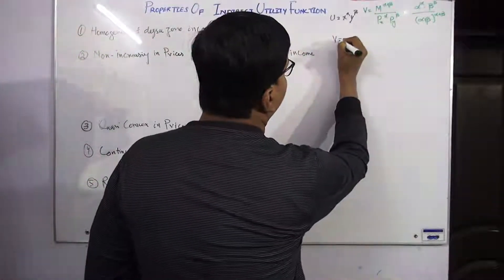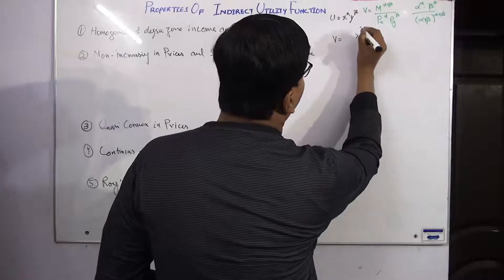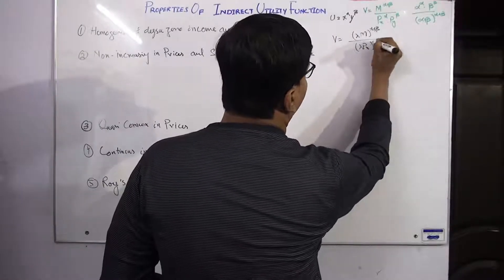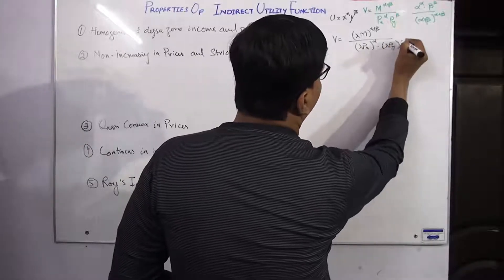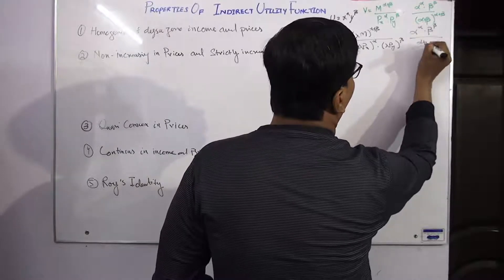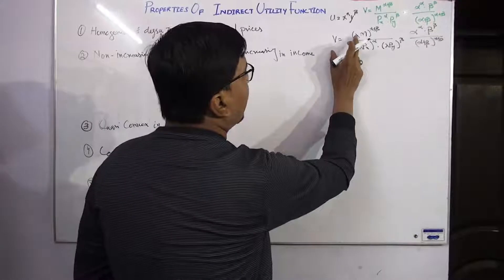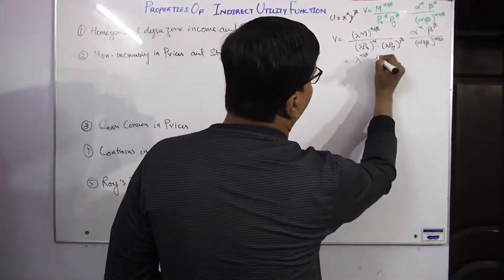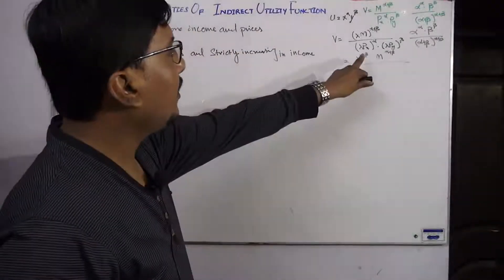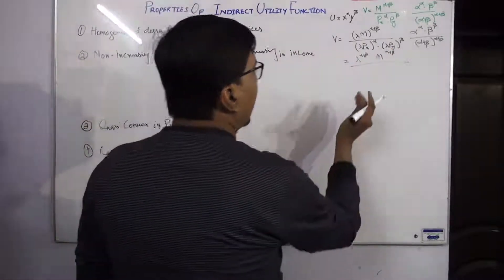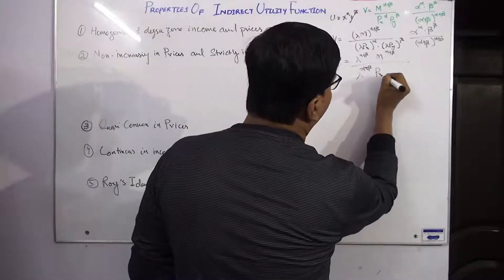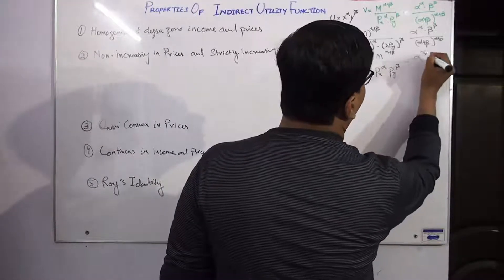Suppose we have V and we increase income by lambda raised to power (alpha + beta), and PX is raised by lambda to the power alpha, and PY raised to the power beta, with the constant factor unchanged. The two lambda terms combine: since the bases are the same, we add the powers, giving lambda^(alpha + beta) in both numerator and denominator.